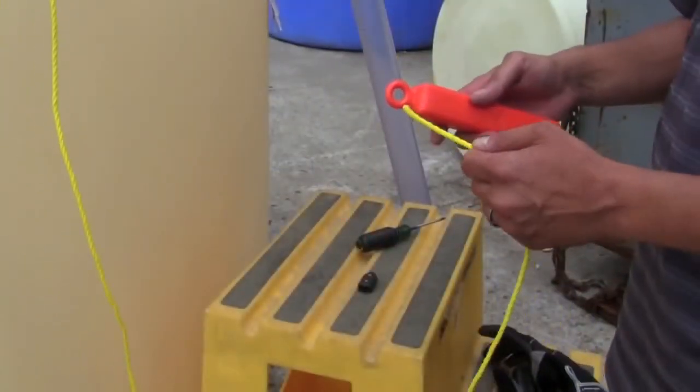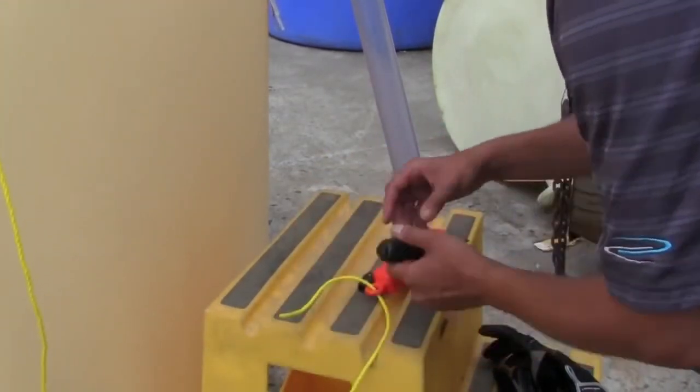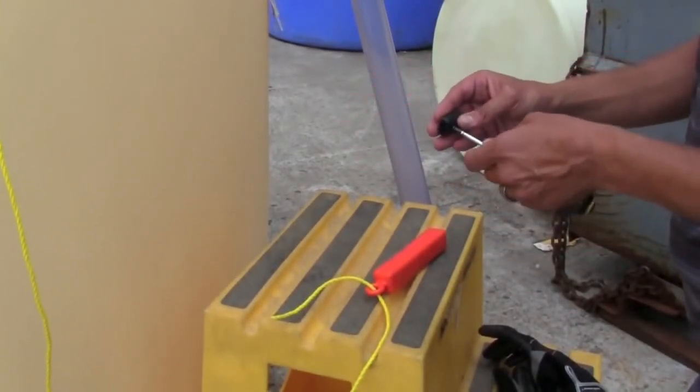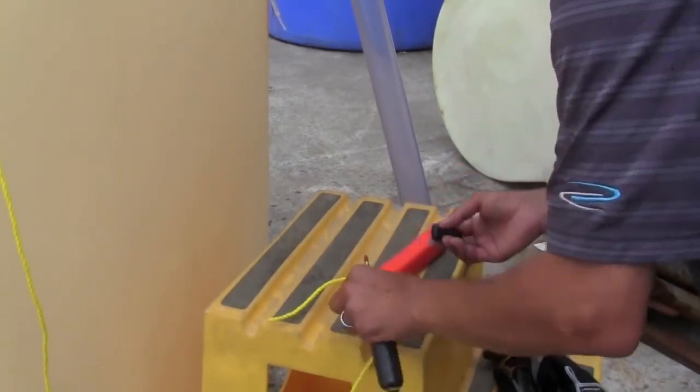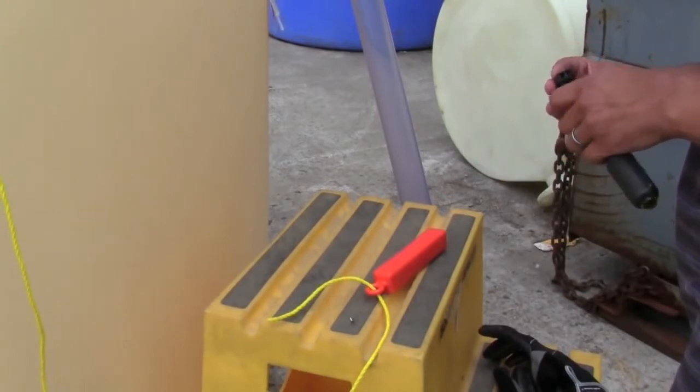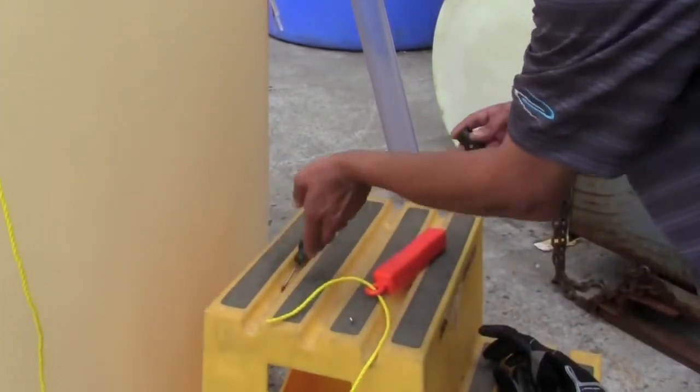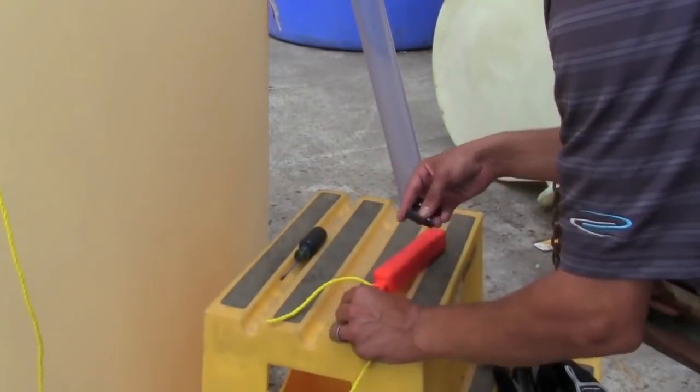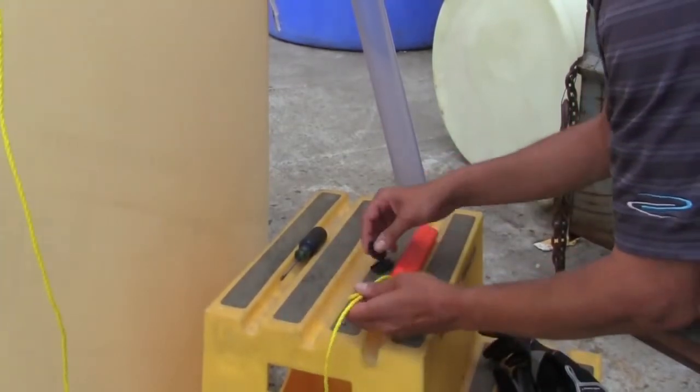We'll now assemble the rope clamp to the visual indicator. Using a Phillips screwdriver, you can open up the clamp itself. And we'll take two pieces of the rope and clamp them inside.